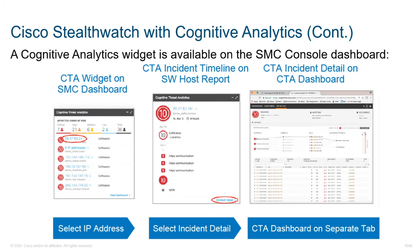Cisco's Cognitive Analytics also has a widget supported on the SMC dashboard, and it can be integrated with web proxies like WSA, Blue Coat, or Squid. This provides an additional way to observe traffic and correlate it with things like syslog and all of our flow data for deeper visibility.